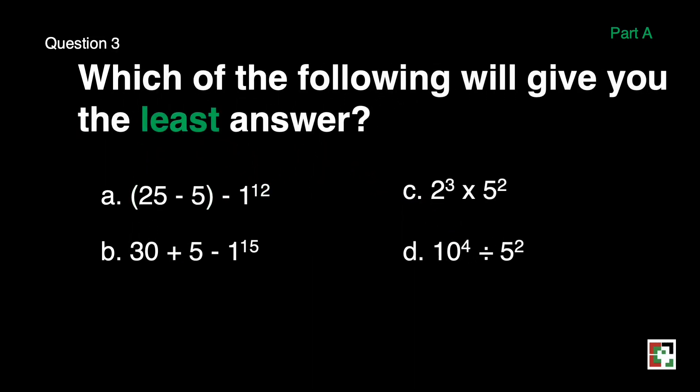Next, which of the following will give you the least answer? A, quantity 25 minus 5 minus 1 to the 12th power. B, 30 plus 5 minus 1 to the 15th power. C, 2 to the 3rd power times 5 squared. And D, 10 to the 4th power divided by 5 squared.